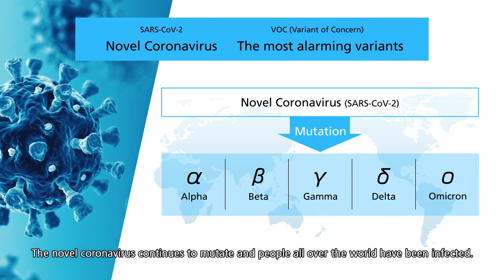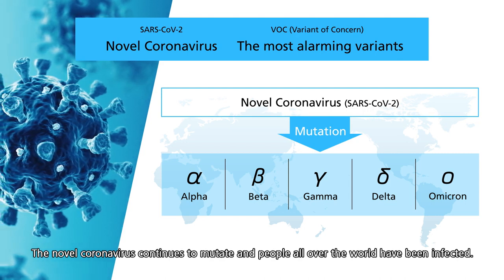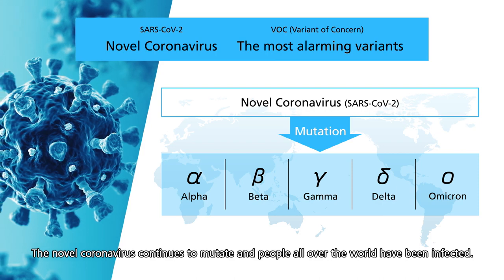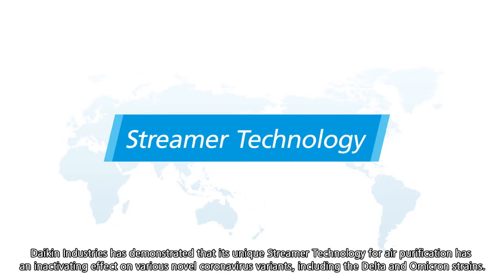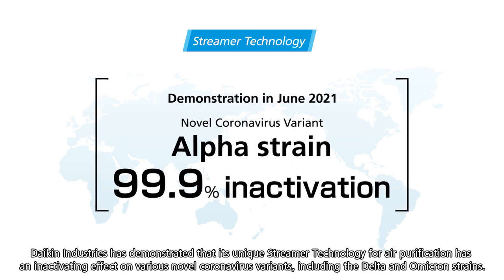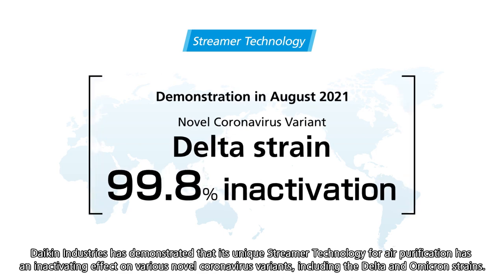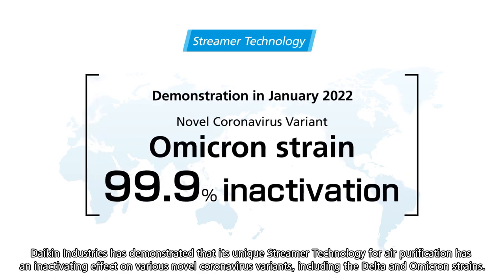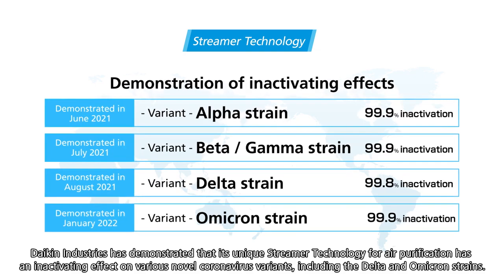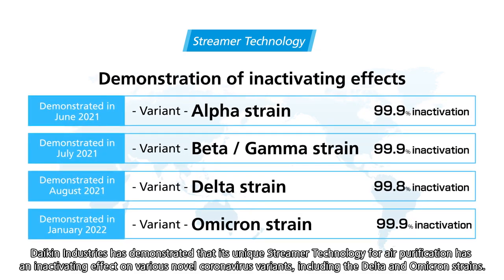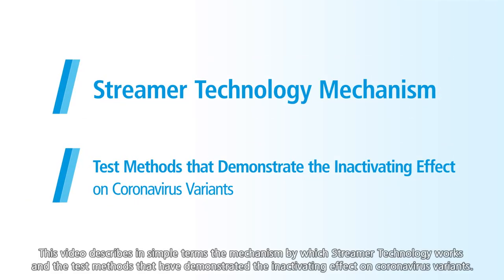The novel coronavirus continues to mutate and people all over the world have been infected. Daikin Industries has demonstrated that its unique streamer technology for air purification has an inactivating effect on various novel coronavirus variants, including the Delta and Omicron strains. This video describes in simple terms the mechanism by which streamer technology works and the test methods that have demonstrated the inactivating effect on coronavirus variants.